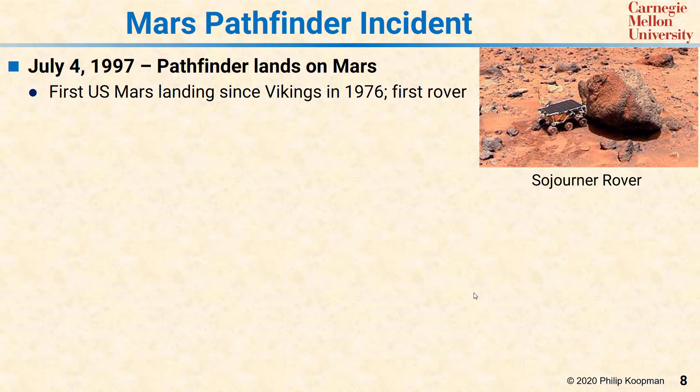While unbounded priority inversion and the need for priority inheritance might sound very esoteric, this actually causes problems in the real world. A classic example is the Mars Pathfinder incident. The Mars Pathfinder was a rover that launched July 4, 1997 and was sent to Mars. It was notable that it had been decades since the US had gotten onto the surface of Mars, so this was a big deal that this rover landed and started running around. But there was a problem.